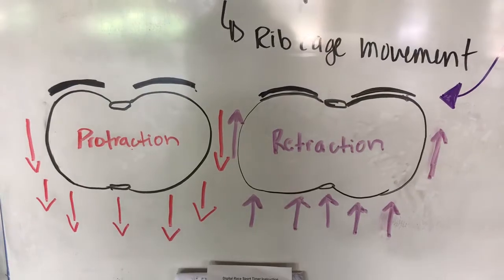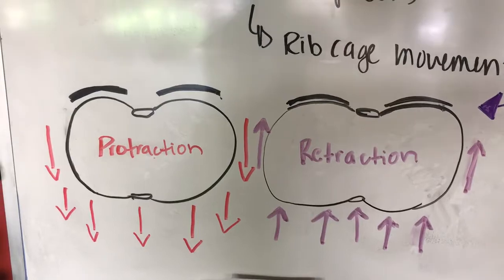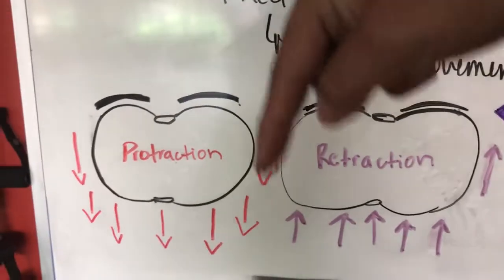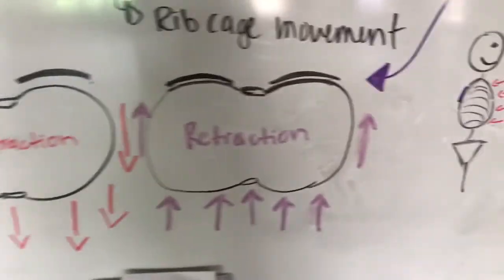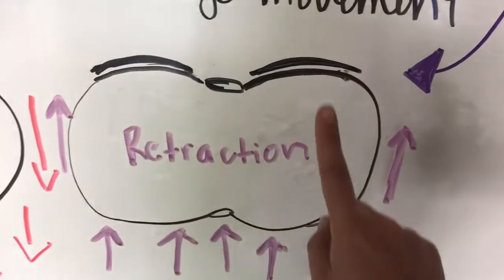The drawing on the left, ribcage protraction means the shoulder blades stay but the ribcage goes forward. Ribcage retraction, shoulder blades stay and the ribcage goes back.